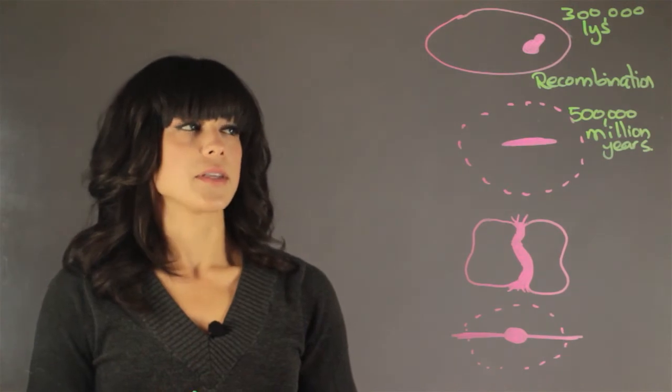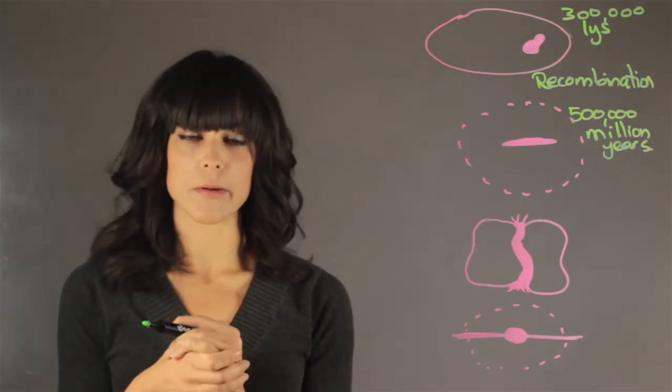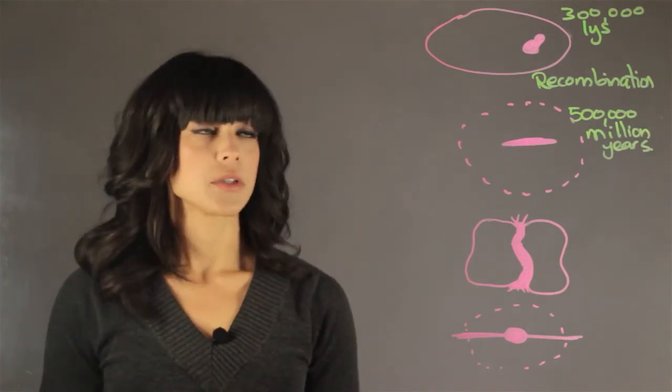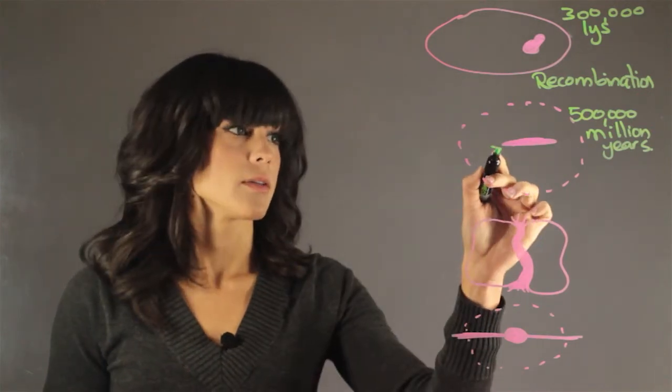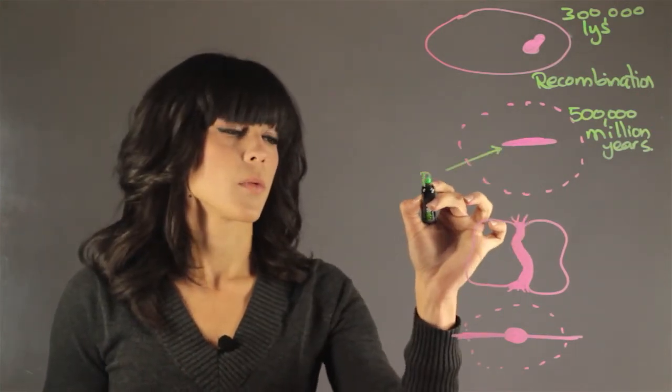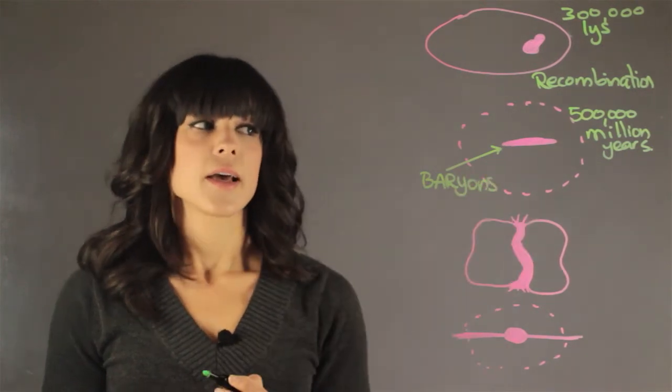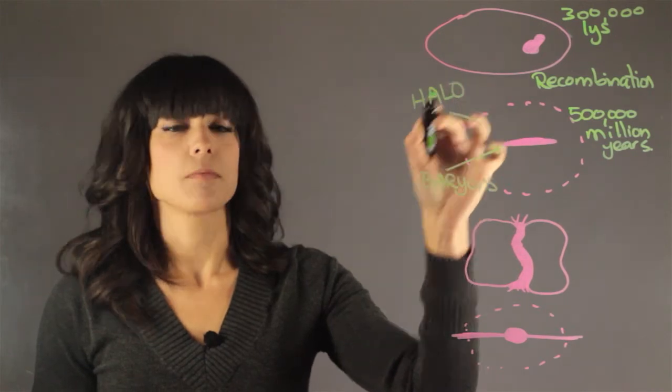So what happens here is that we have gravitational instability in these lumps of density, and it collapsed under its own gravity. So all the baryonic matter goes into the core. So here we have all the baryons, so we have all the atoms. And then here we get a halo that is made out of dark matter.